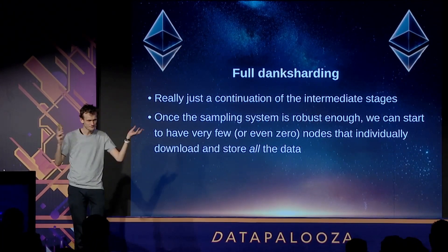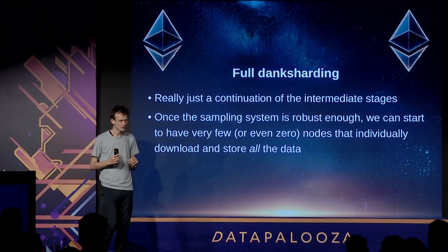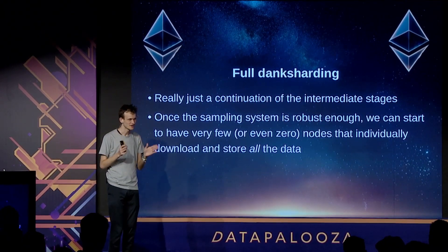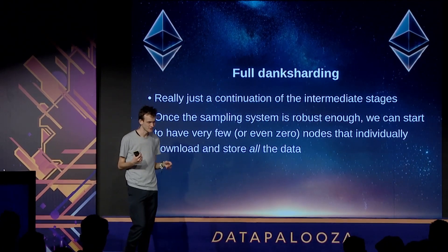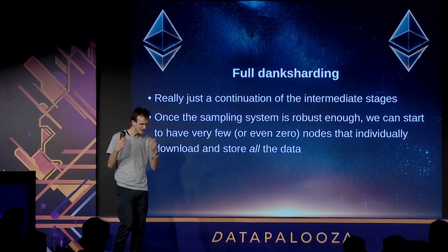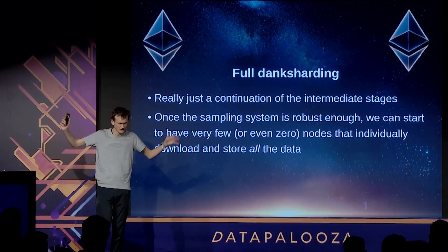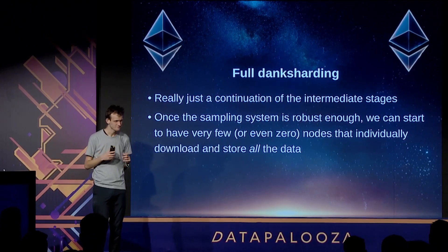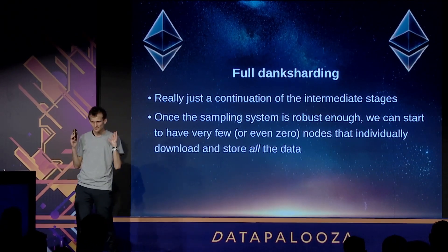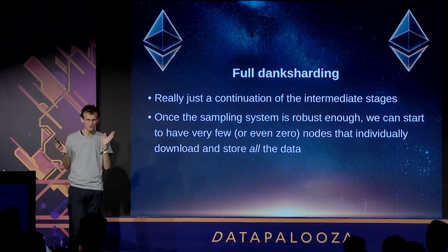EIP-4844 is what all of this starts with, and it already puts up a significant amount of space that rollups can use to publish their data and ensure it's actually available — so anyone can download it, anyone can compute the current state, and if there's a mistake, anyone can catch it. Over time, that space increases as technology develops, and over the next five to ten years, we slowly work toward the Ethereum data space being a large enough space for all of the activity we want to do. Hope you understand, and hope you participate in making the Ethereum data availability future happen. Thank you.